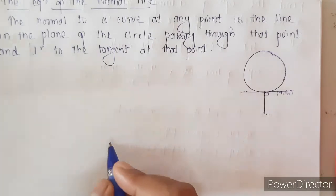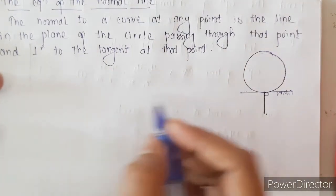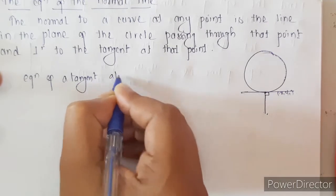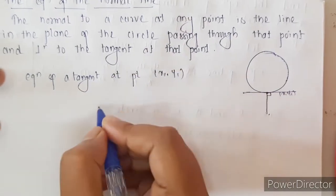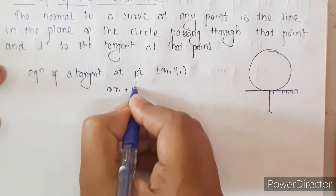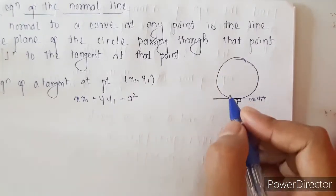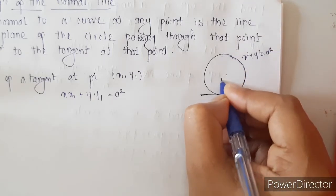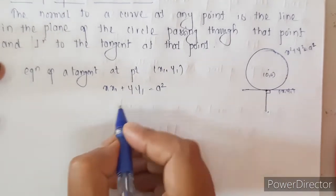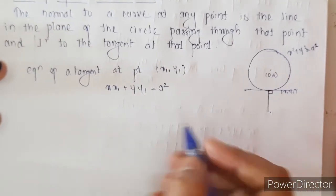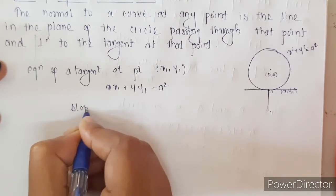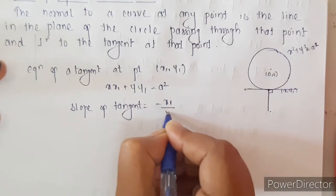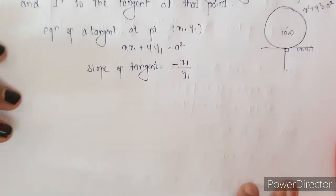Let us find the equation of this normal. We know that the equation of a tangent at point x1, y1 is x·x1 plus y·y1 equals a squared. The equation of the circle is x squared plus y squared equals a squared, assuming the center is at the origin. The slope of the tangent is minus x1 upon y1 — that is, the coefficient of x upon the coefficient of y.